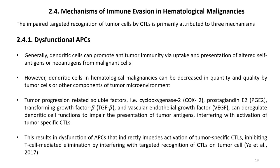The impaired targeted recognition of tumor cells by CTLs is primarily attributed to three mechanisms. The first is dysfunctional APCs: dendritic cells in hematological malignancies can be decreased in quantity and quality by tumor cells or other components of the TME. Tumor progression-related soluble factors like cyclooxygenase-2 (COX2), prostaglandin E2 (PGE2), TGF-beta, and VEGF can deregulate dendritic cell functions, impairing presentation of tumor antigens and interfering with activation of tumor-specific CTLs.